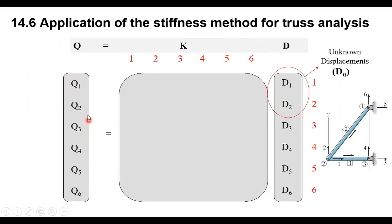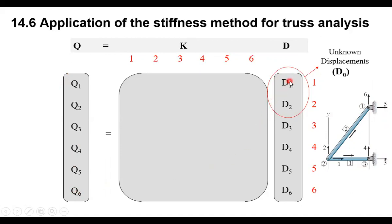The first matrix is the force matrix. The number of forces equals the number of degrees of freedom. For example, in the truss from example 14.1, we have six degrees of freedom because we have three nodes, and at each node we have two degrees of freedom, so the total is six. You will have a force matrix from Q1 to Q6, and a displacement matrix from D1 to D6. The structural stiffness matrix will be a six-by-six matrix.